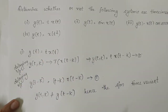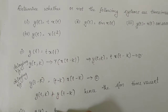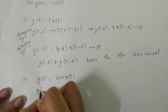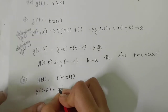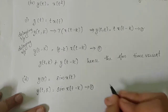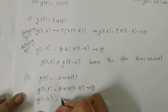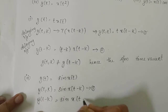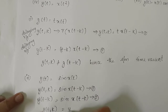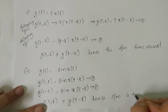The second question: y(t) = sin(x(t)). When we delay the input, y(t,k) = sin(x(t−k)). That is the first equation. Then delaying the output, y(t−k) = sin(x(t−k)). Since y(t,k) equals y(t−k), hence the system is time invariant.